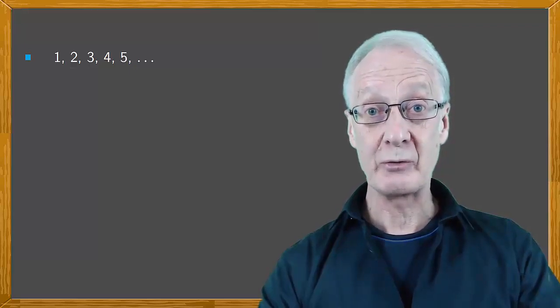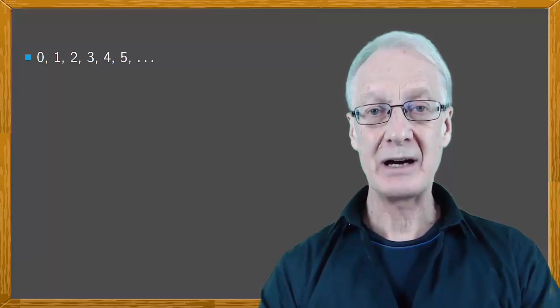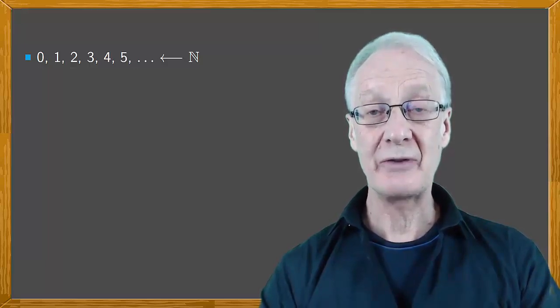Eventually, zero was also recognized as a valid number. Today, we consider the natural numbers to form a set, and denote it by the letter N. Some mathematicians include zero as a natural number, and others don't. In fact, there's still disagreement over this issue.